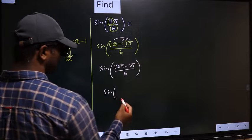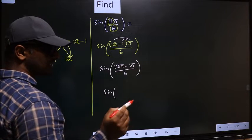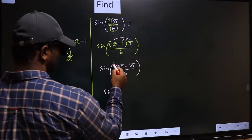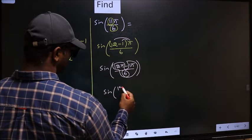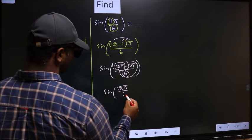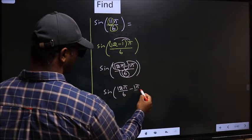Next, sine of. Now you should split the denominator in this way. That is 12π by 6 minus 1π by 6.